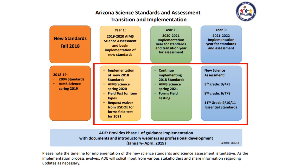In the year 2021, the field test of the new science assessment aligned to the 2018 science standards will be administered to schools in grades 5, 8, and 11. That year will also include the current AIMS science assessment aligned to the 2004 standards, administered in spring of 2021 in grades 4, 8, and high school biology.